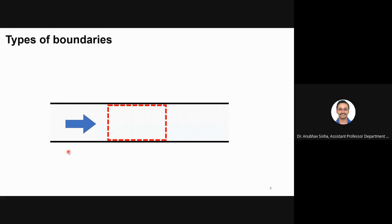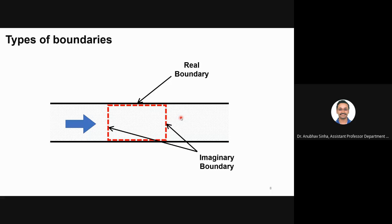Similarly, if we take a dotted line as a boundary in a pipe, that is an open system or control volume. The boundary near the wall is a real boundary, because there is an exact physical wall there. The boundaries I draw arbitrarily in the middle — those are imaginary boundaries, because there is no physical wall; I made the boundary based on my convenience and how I want to analyze the system.